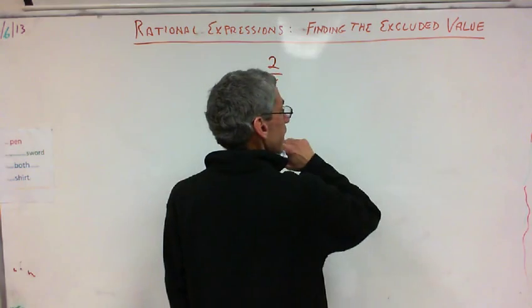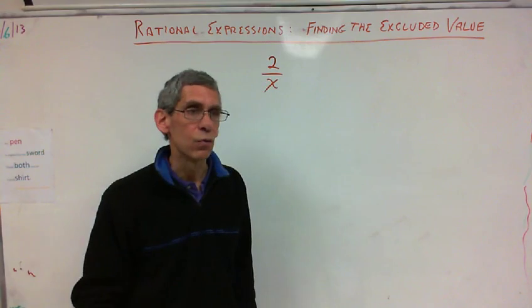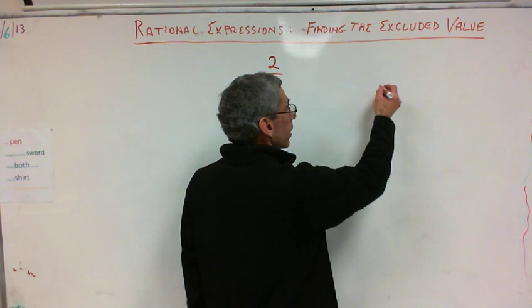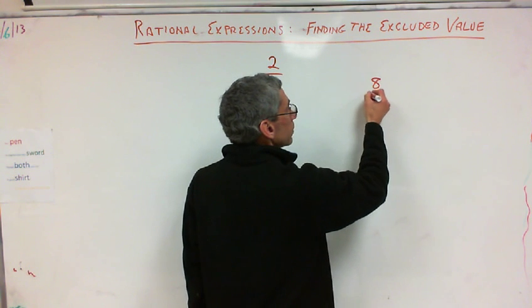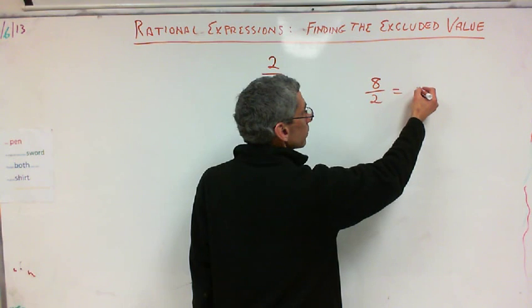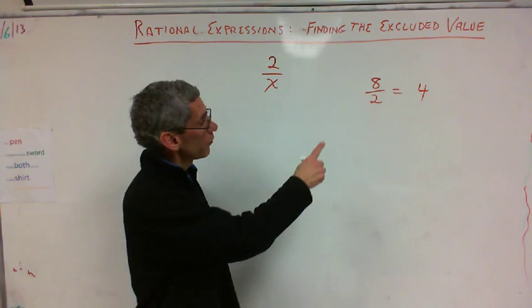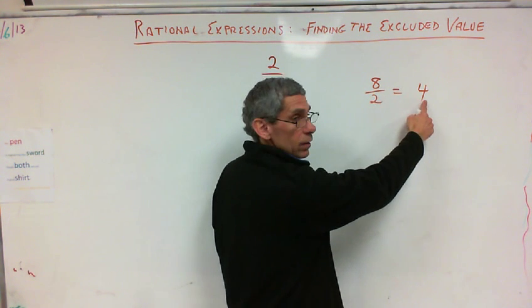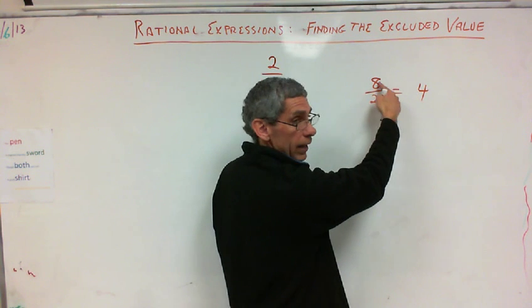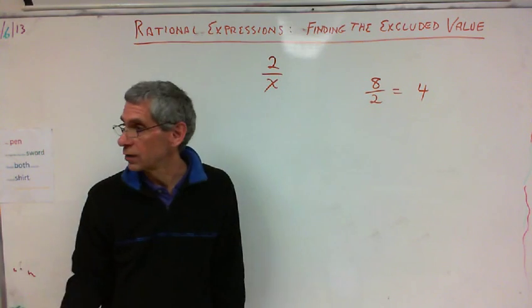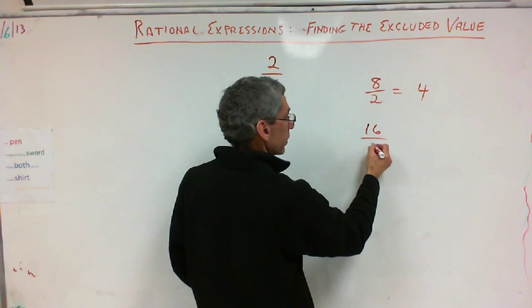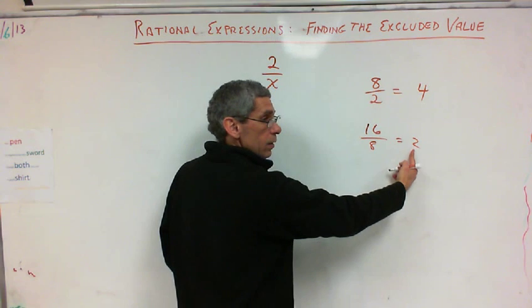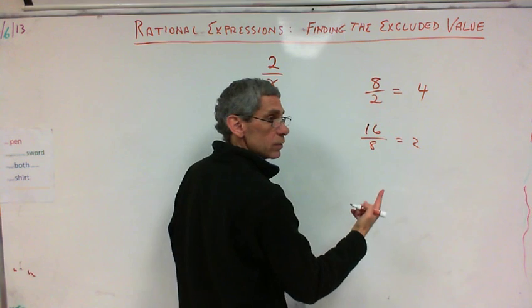Remember, just to review, if I said, let's see, how does this work again? Eight divided by two is what? Four. Okay. Eight divided by two is four. If I multiply two, the denominator, times what this equals, I will get eight, right? Two times four is eight. Always works. Sixteen divided by eight is two, right? If I multiply the denominator by that, I get 16. Always works.